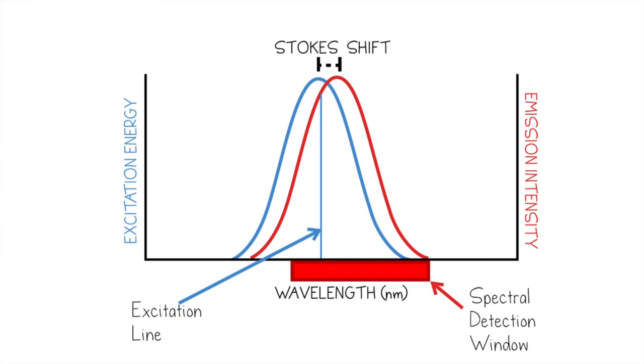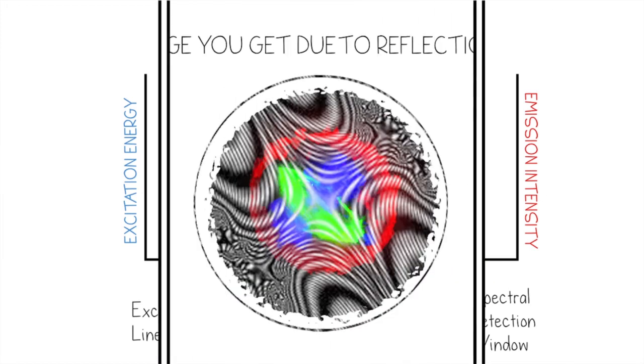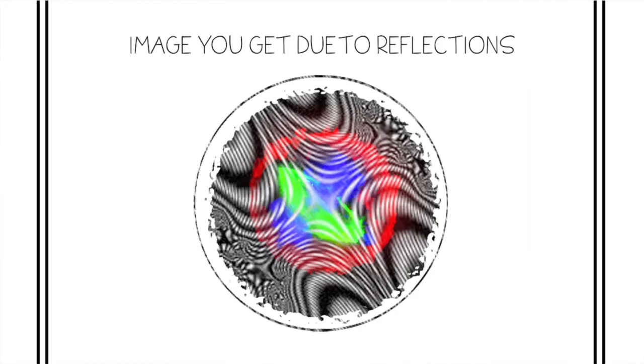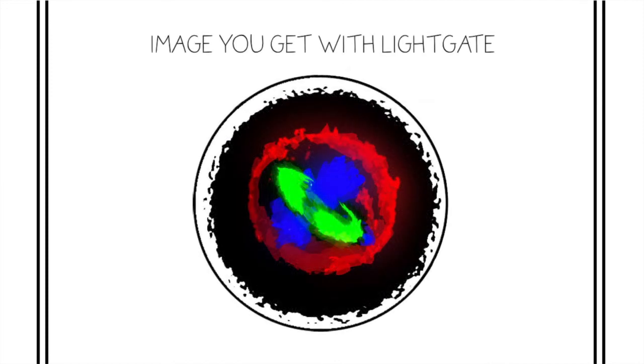A Leica Confocal with light gate removes artifacts due to reflection and autofluorescence with a filter-free method, so that your images accurately represent your specimen and not what's around it.